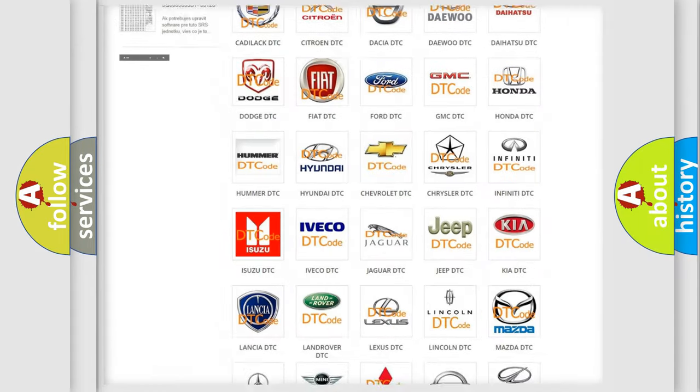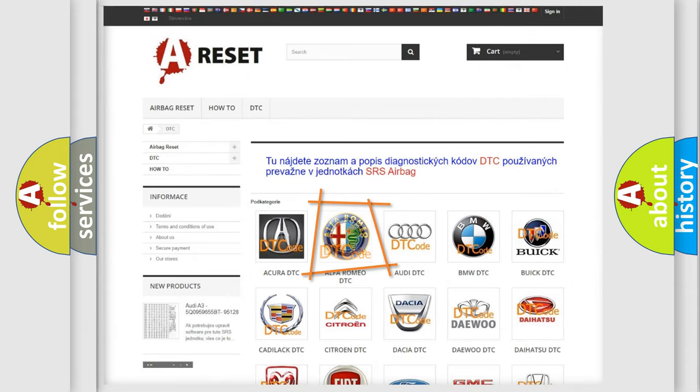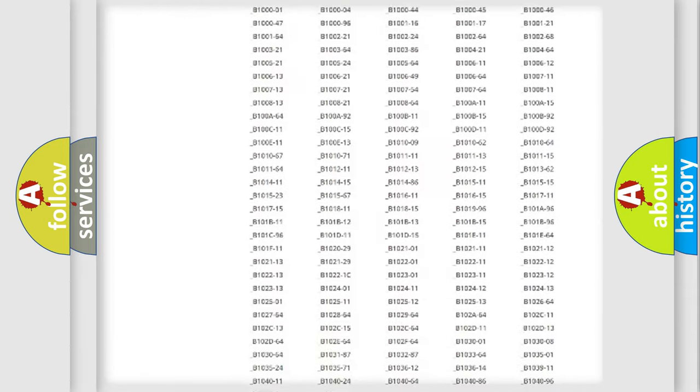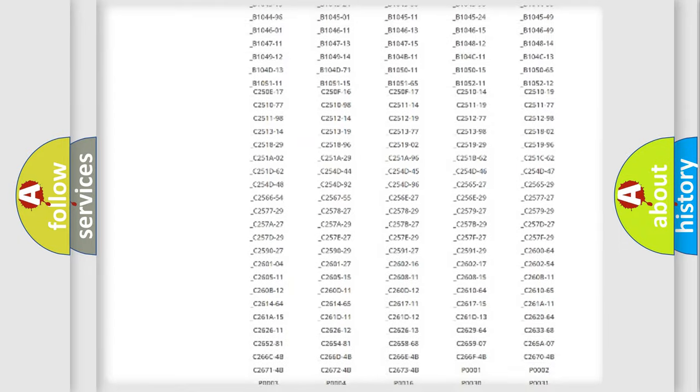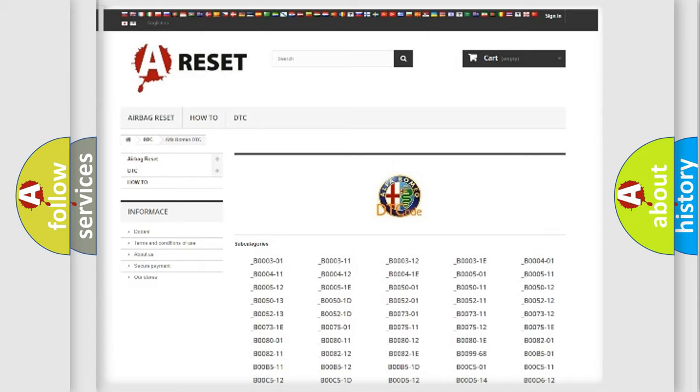Our website airbagreset.sk produces useful videos for you. You do not have to go through the OBD2 protocol anymore to know how to troubleshoot any car breakdown. You will find all the diagnostic codes that can be diagnosed in Alfa Romeo vehicles, and many other useful things.